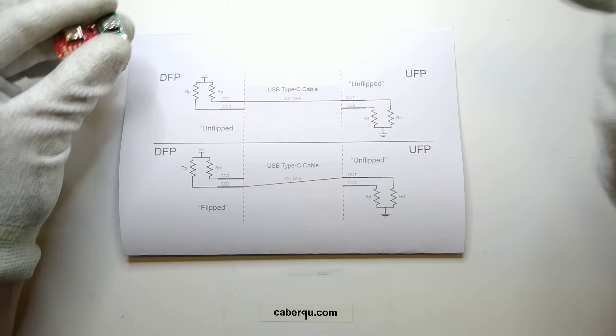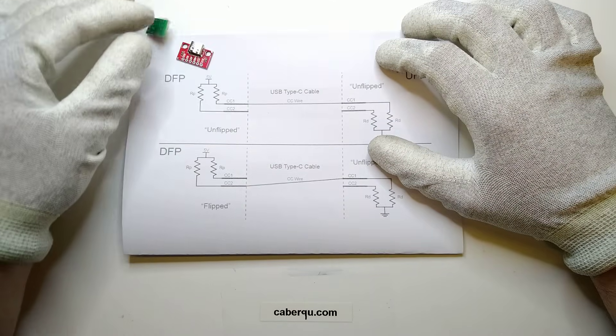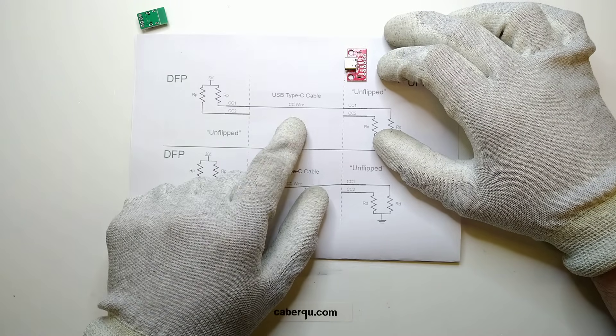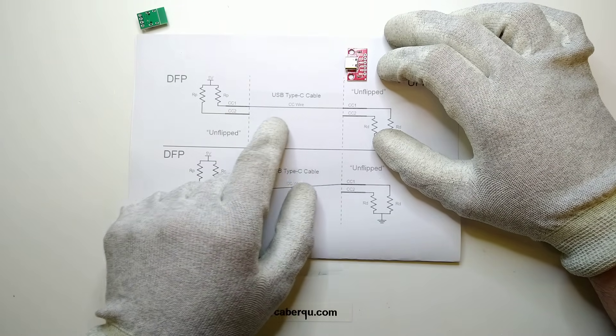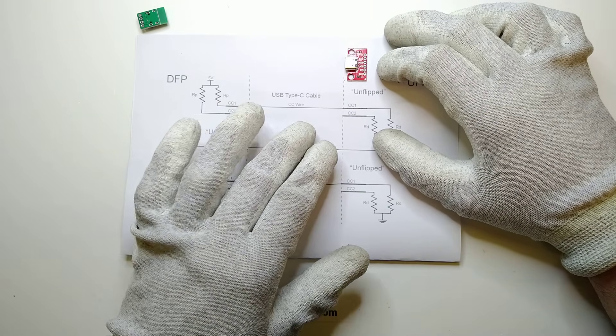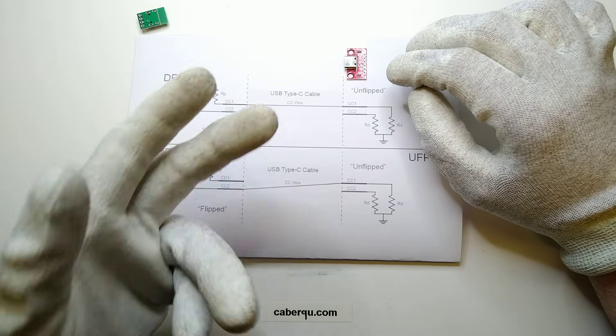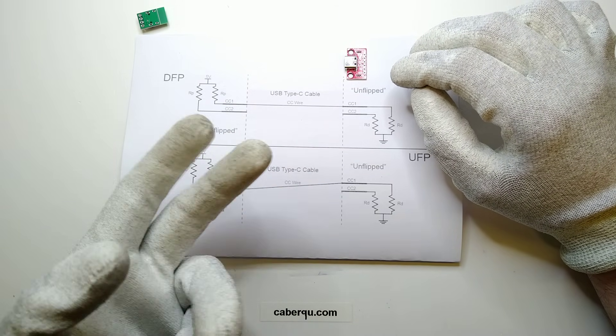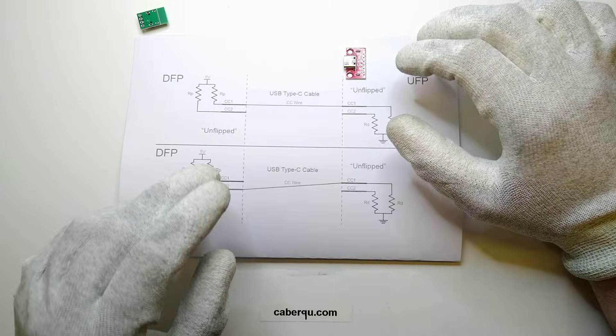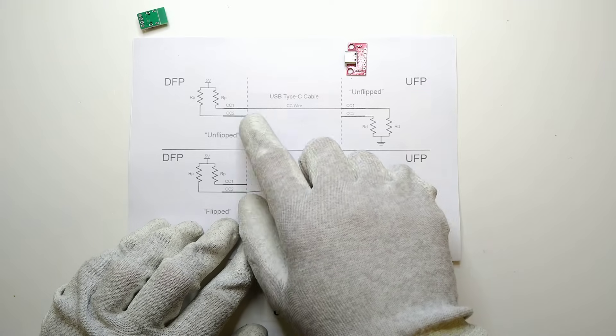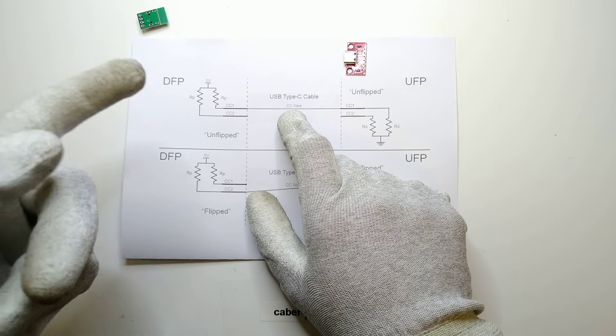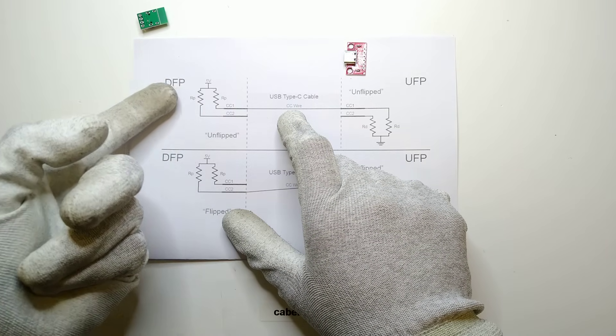And I've even printed out this little drawing where they explain that. So here in the middle we have our USB C cable, so the USB C to USB C cable with just the CC wires shown. So the V plus and V bus and ground as well as the D plus and D minus are not shown here. It's just for the power negotiation, and each cable has to have at least one of the CC wires.